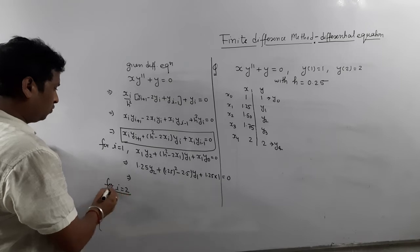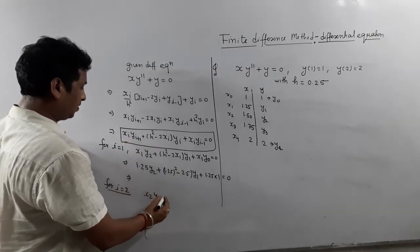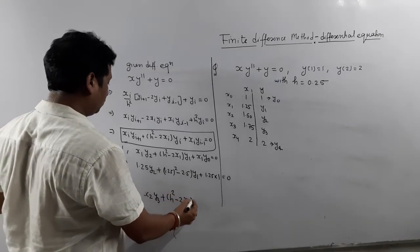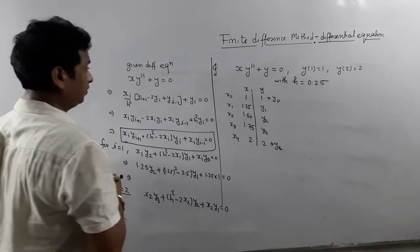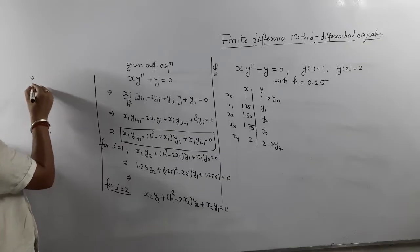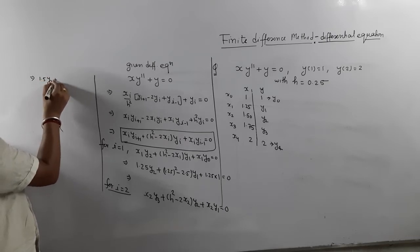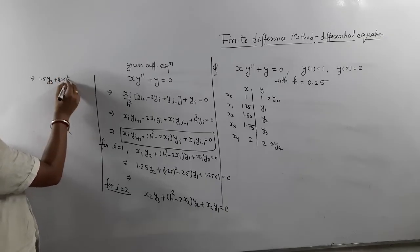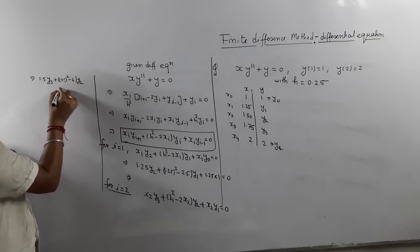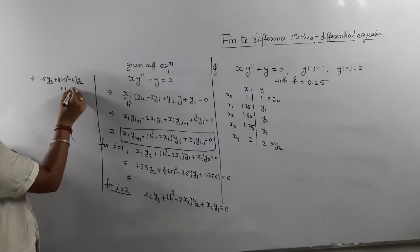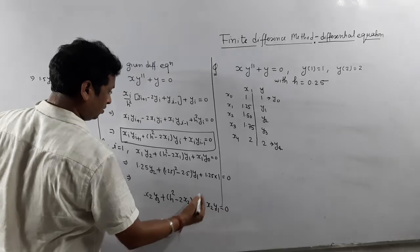For i = 2: x₂·y₃ + (h² − 2x₂)·y₂ + x₂·y₁ = 0. Substituting x₂ = 1.5 and h² = 0.0625 gives the second equation. Simplifying yields the second equation in terms of y₁, y₂, and y₃.